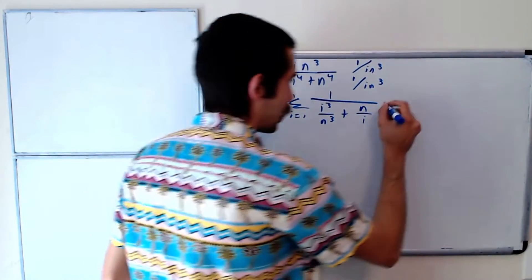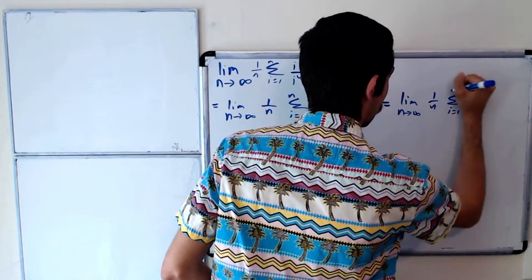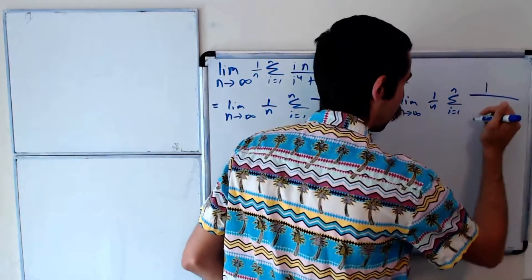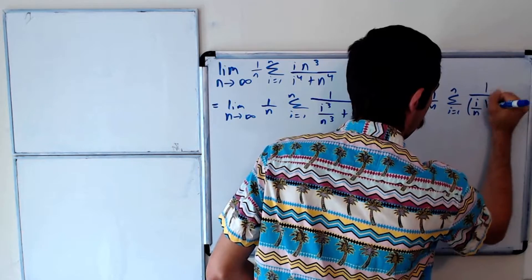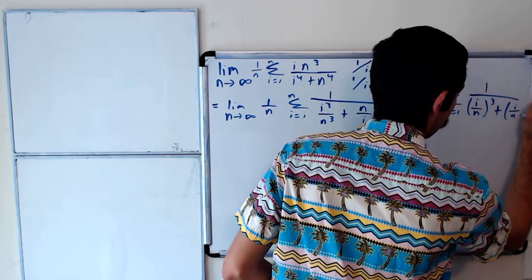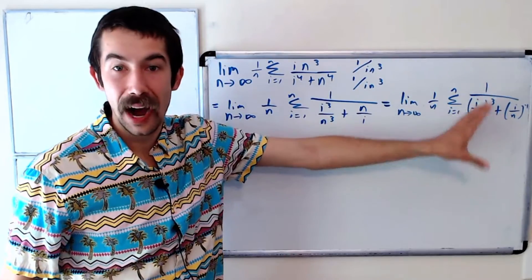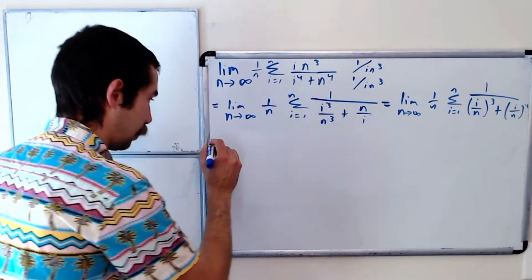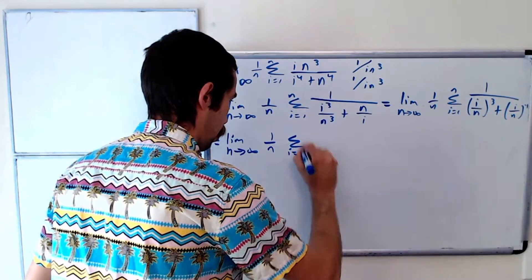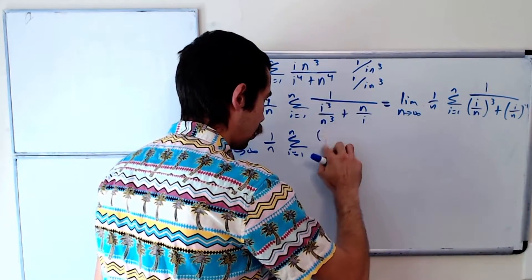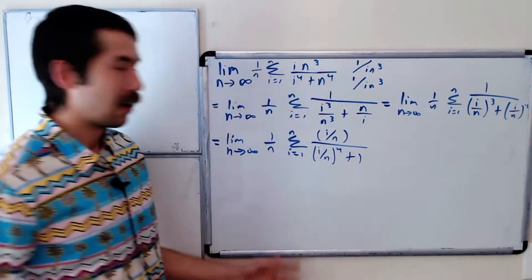We can rewrite this as the limit as n goes to infinity of 1 over n, sum from i equals 1 to n of 1 over (i/n)³ plus (i/n)⁻¹. Now let's multiply the numerator and denominator by i/n to get rid of that negative exponent. So we get i/n in the numerator and i/n to the fourth plus 1 in the denominator.